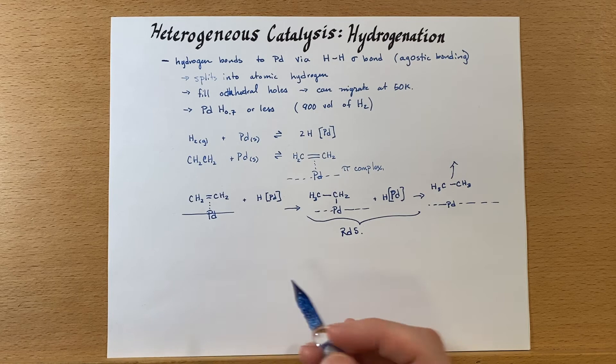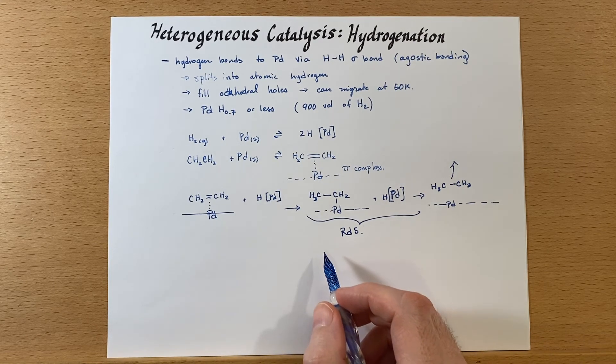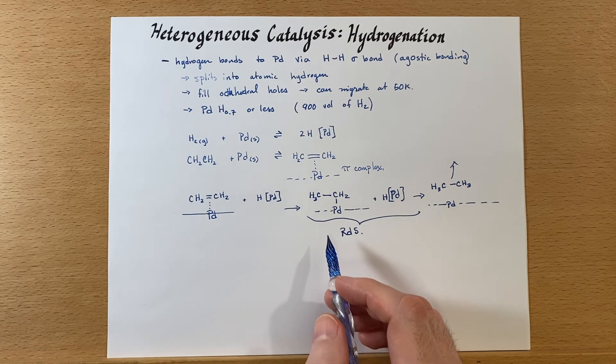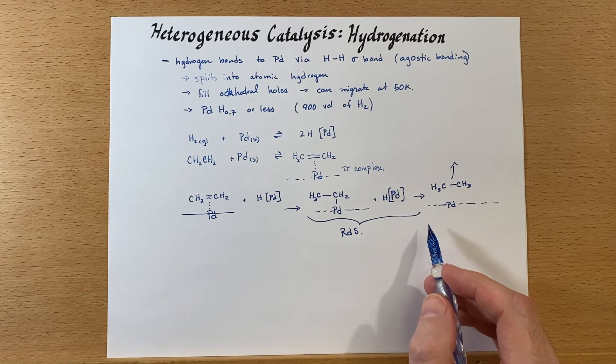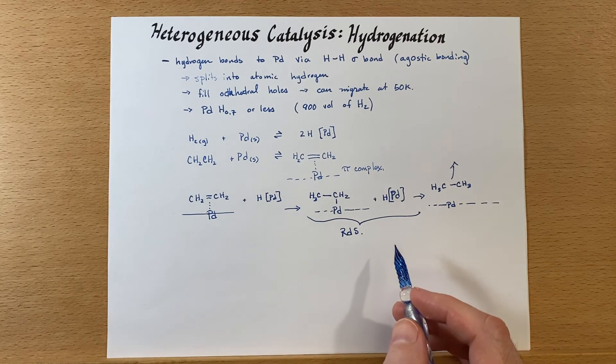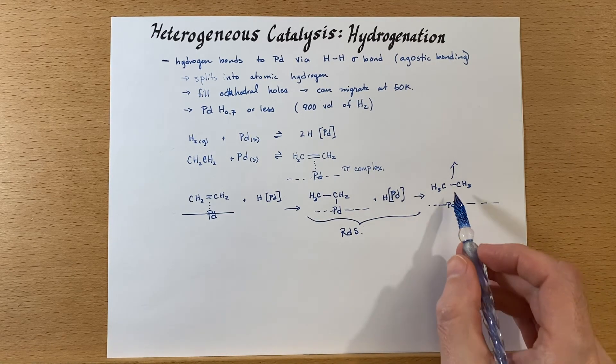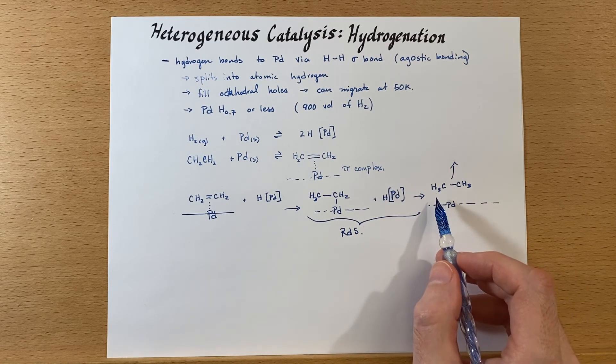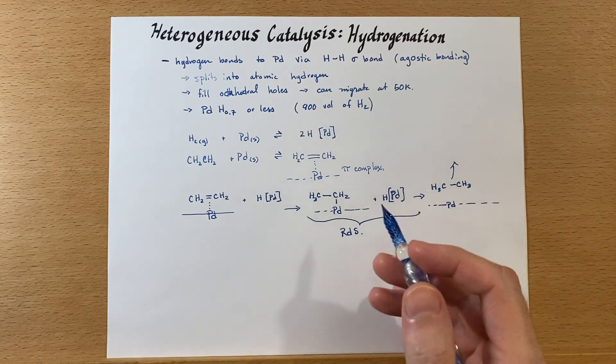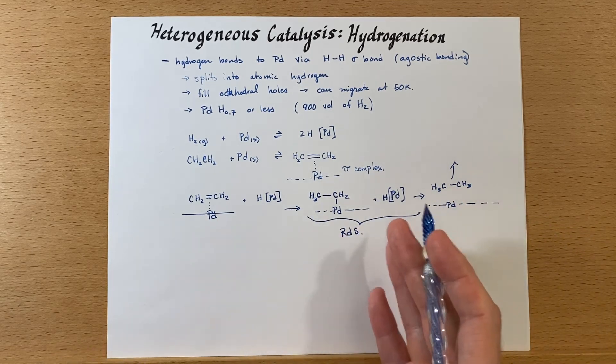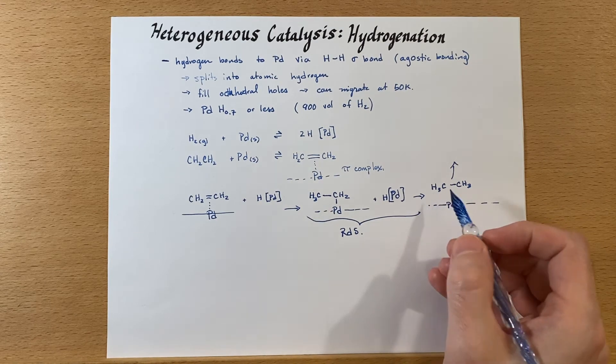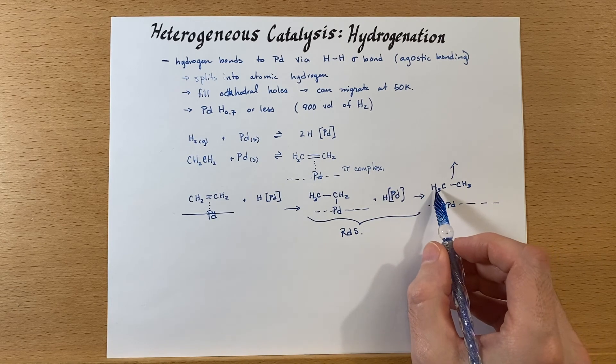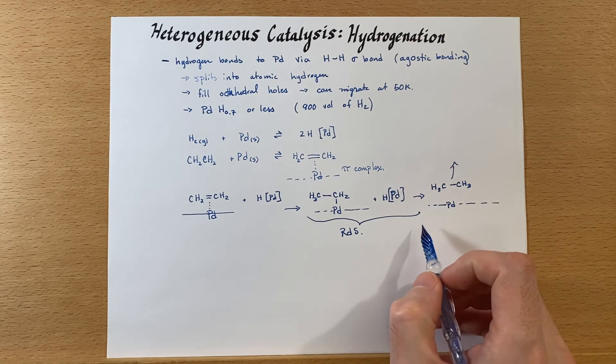It's been determined that it is reversible and you can study this using deuterium. So if we were to supply deuterium into this reaction, you'll notice that some of these hydrogens will then be replaced by deuterium. If it was not reversible, you would only see deuterium here and here potentially.